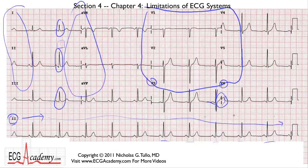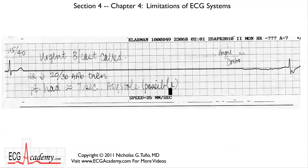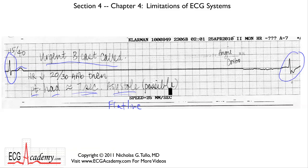We'll get into actually how to interpret it in future chapters, but I want to show you a different kind of tracing. This is a rhythm strip from my files, and you can see written on here an urgent broadcast was called, because the patient had about seven seconds of asystole — that means flat line, no rhythm. You can actually see that here: there's a QRS complex, then a T-wave, and then nothing until way over here where there's another QRS complex. It looks like the heart stopped. Well, here's what you need to know.